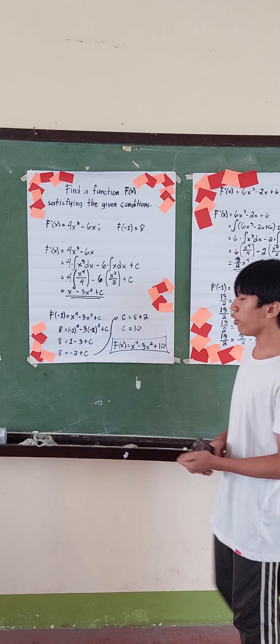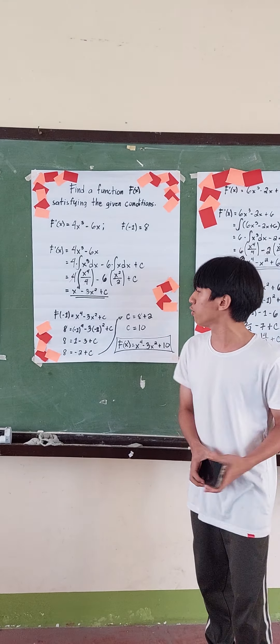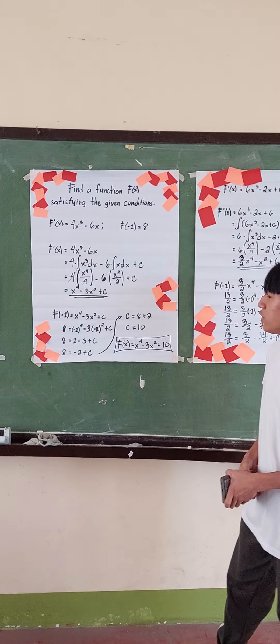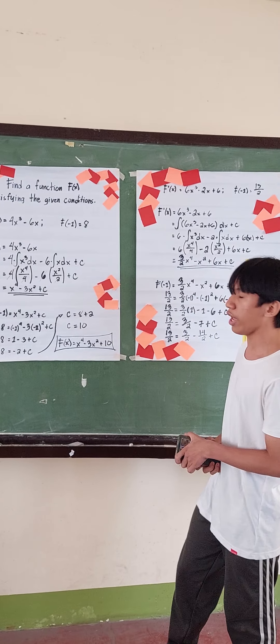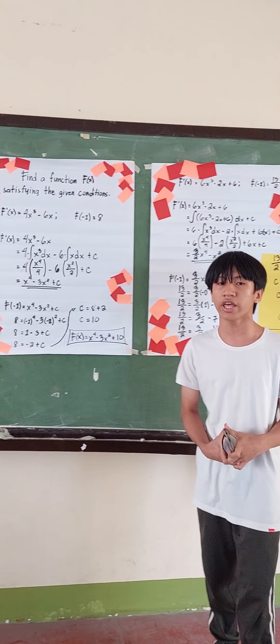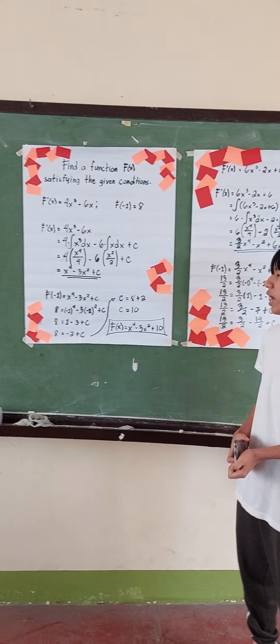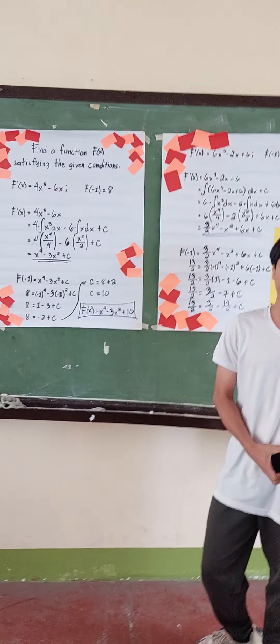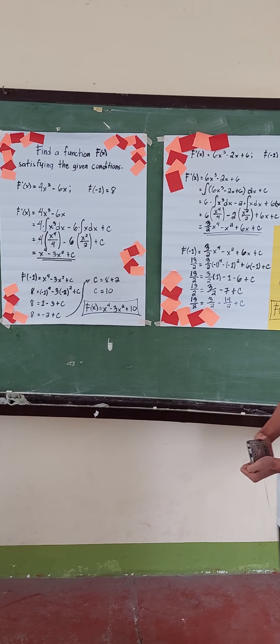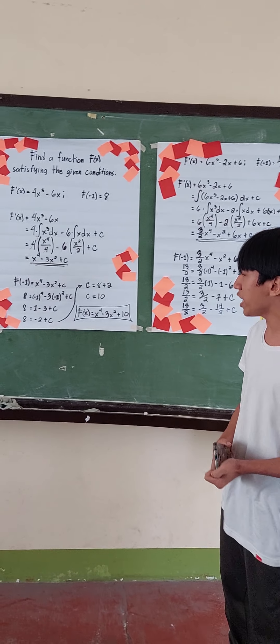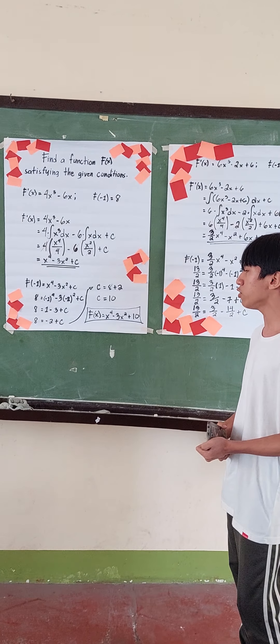Now let's solve for c. We have c is equal to 8 plus 2, so 8 plus 2 is equal to 10. The value of c is equal to 10. So then f of x is equal to x to the 4th minus 3x squared plus 10.